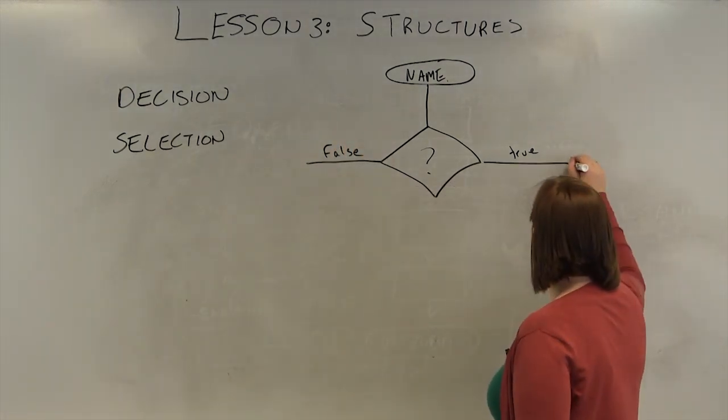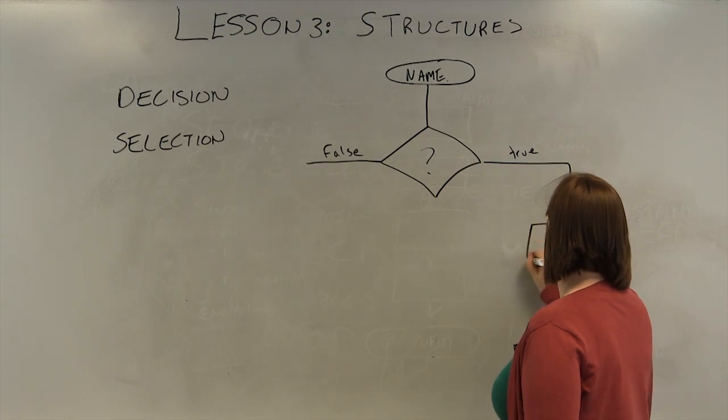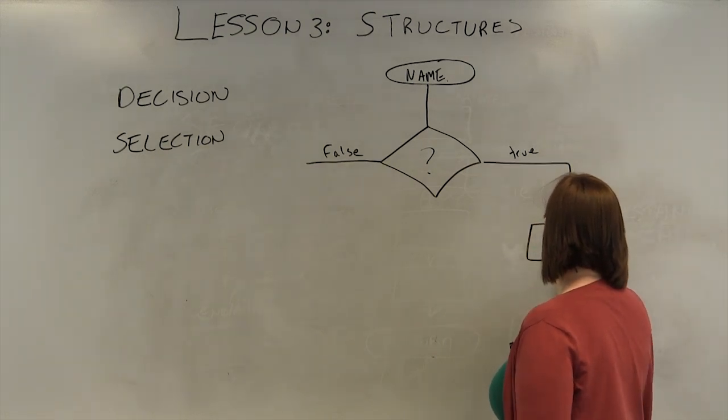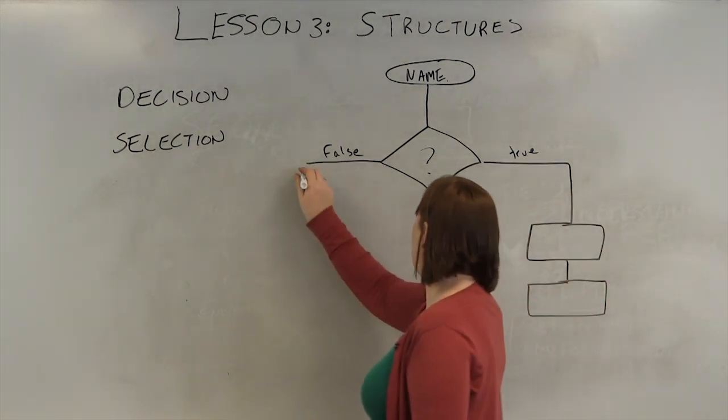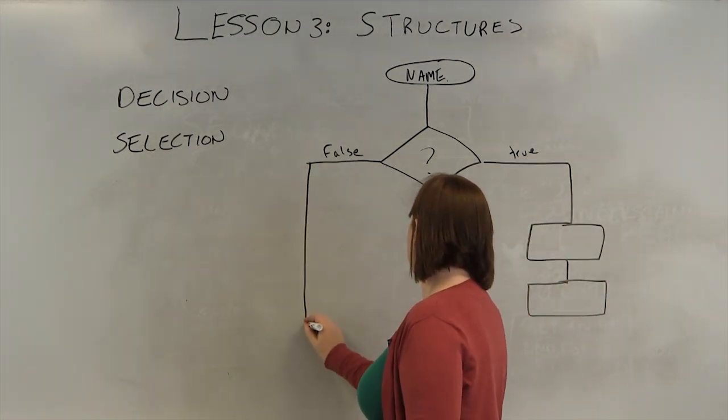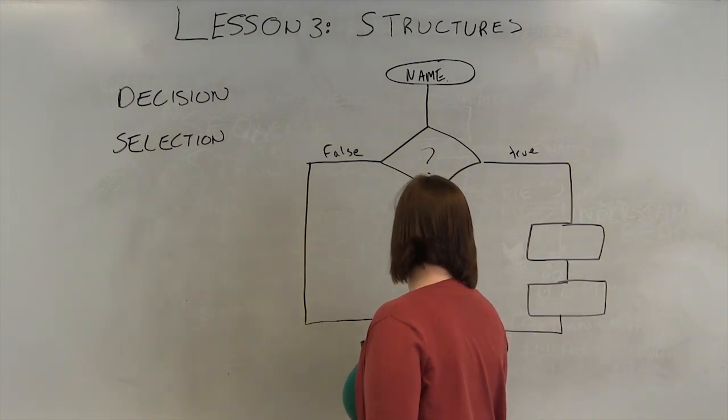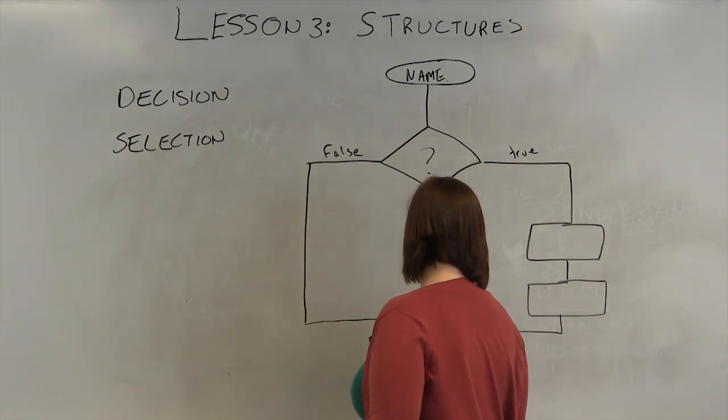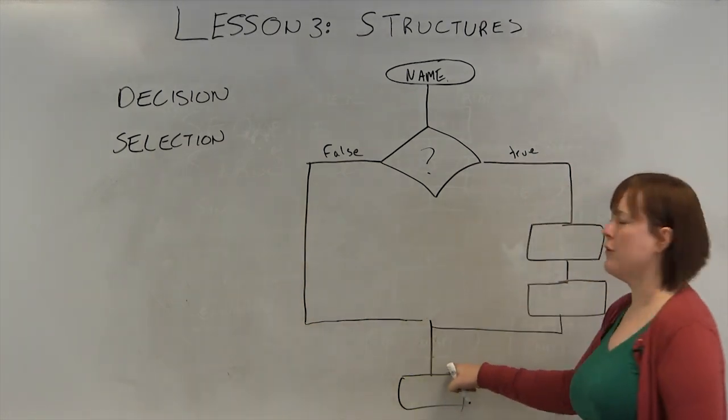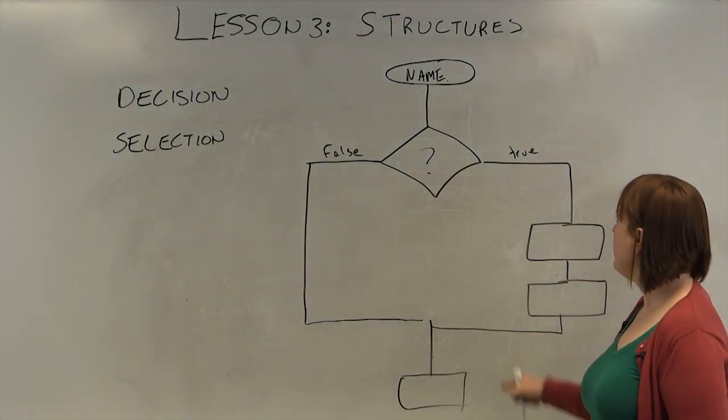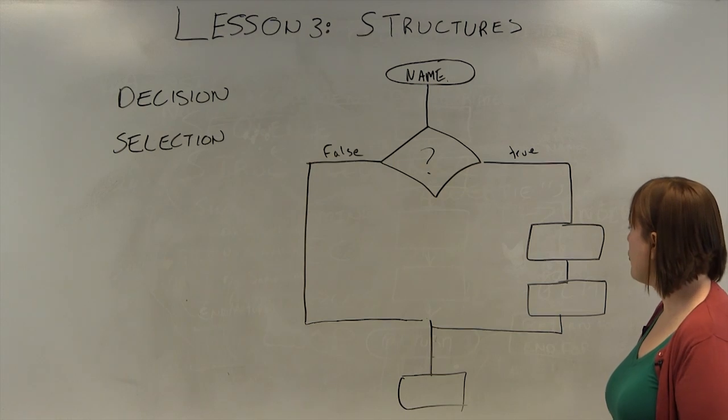This can have a bunch of different things happening, or it can have nothing at all happening. But what's always true is it will always return to the same spot in the logic to go to the next level when it's done. So that is your decision structure.